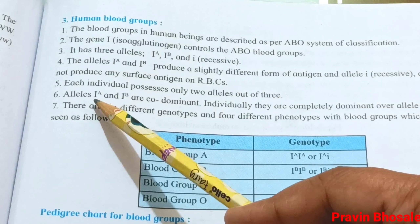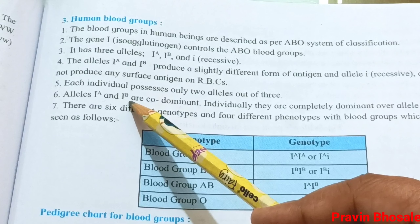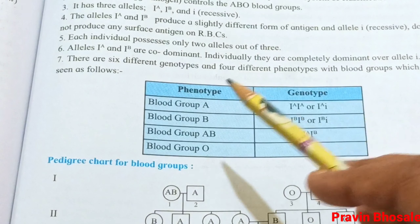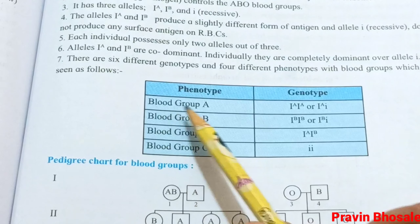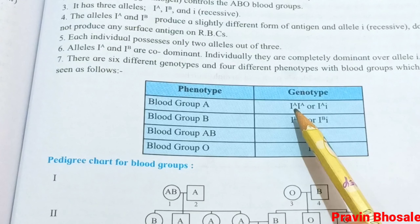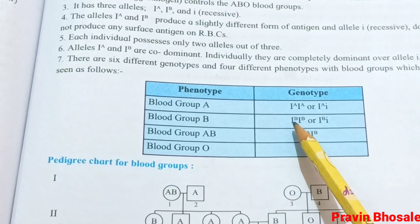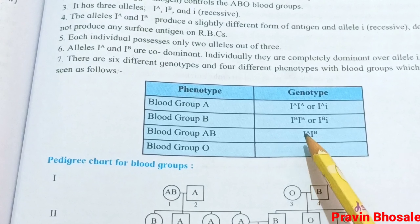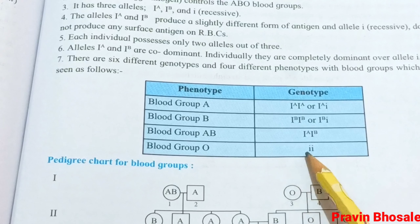For example, if I-A and small i are present, the person will have blood group A. If I-B and small i are present, the person will have blood group B — both are dominant over small i. There are six different genotypes and four different phenotypes. Blood group A: genotype I-A I-A or I-A small i. Blood group B: genotype I-B I-B or I-B small i. Blood group AB: genotype I-A I-B (co-dominant). Blood group O: genotype small i small i.